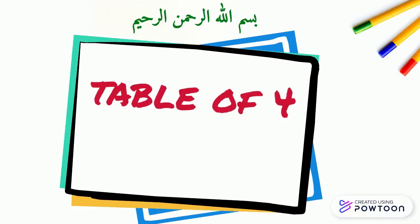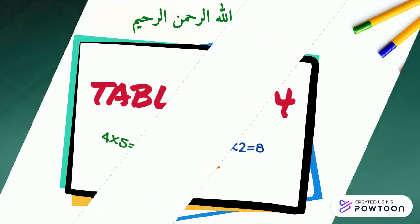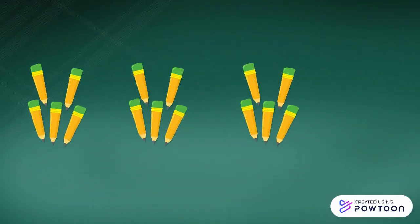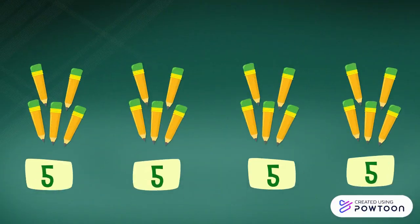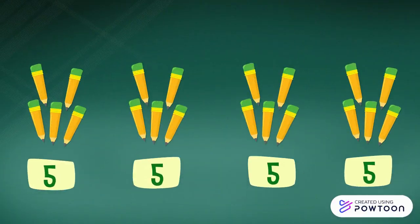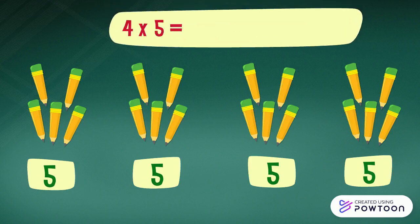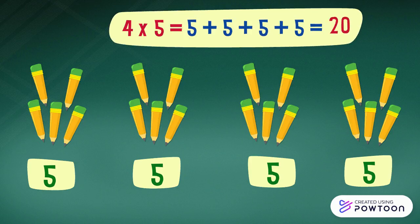The Multiplication Table of 4. We have 4 groups of 5 pencils. The total number of pencils is 4 times 5, which is equal to 5 plus 5 plus 5 plus 5 plus 5, which is equal to 20. So 4 times 5 equals 20.